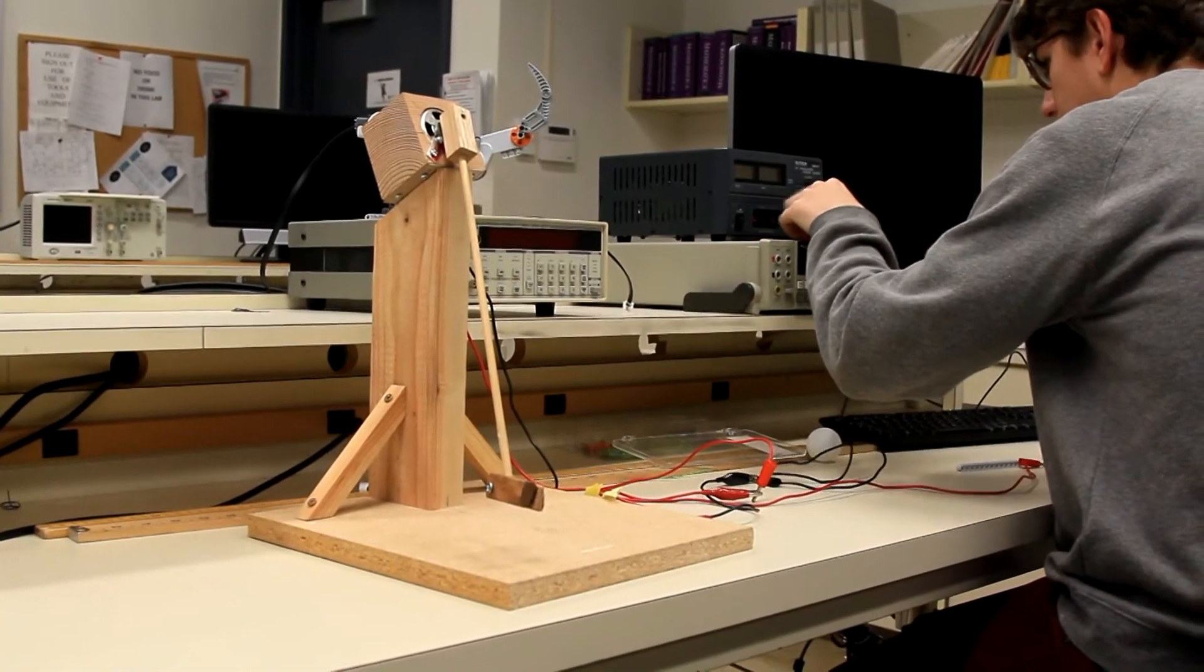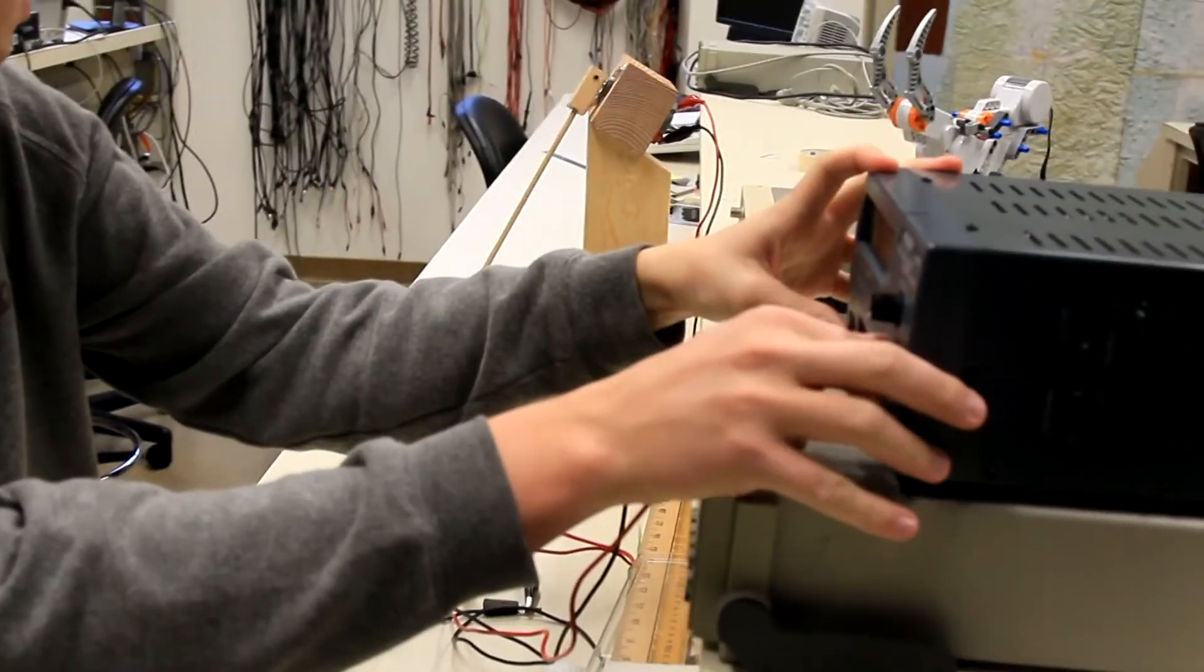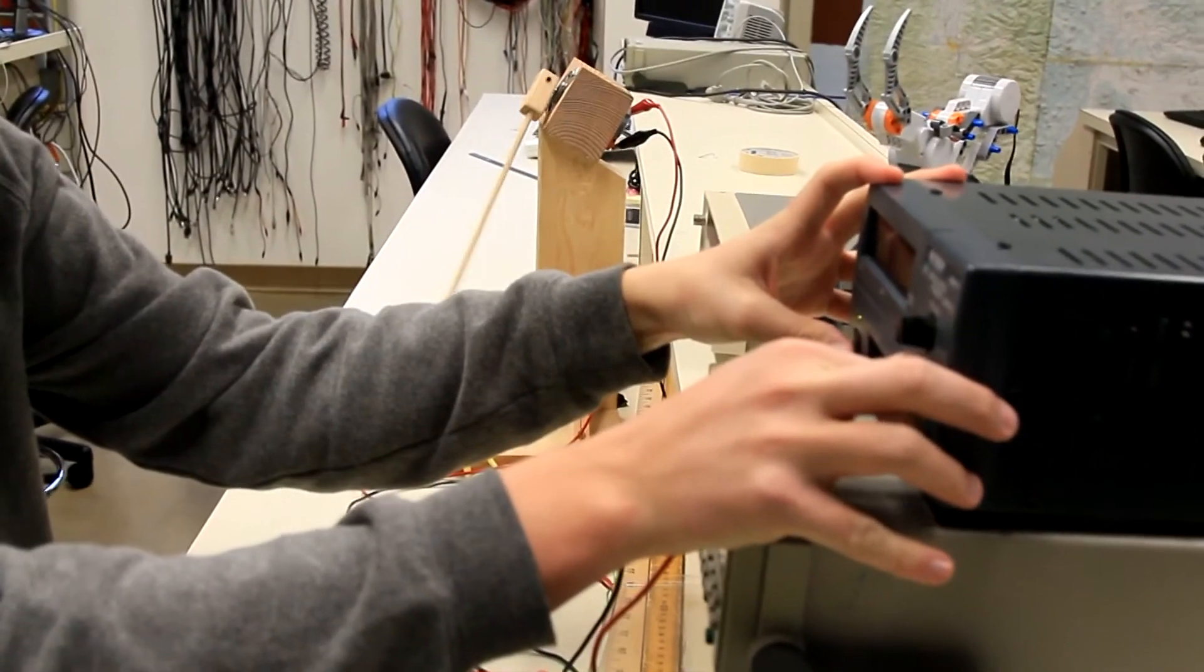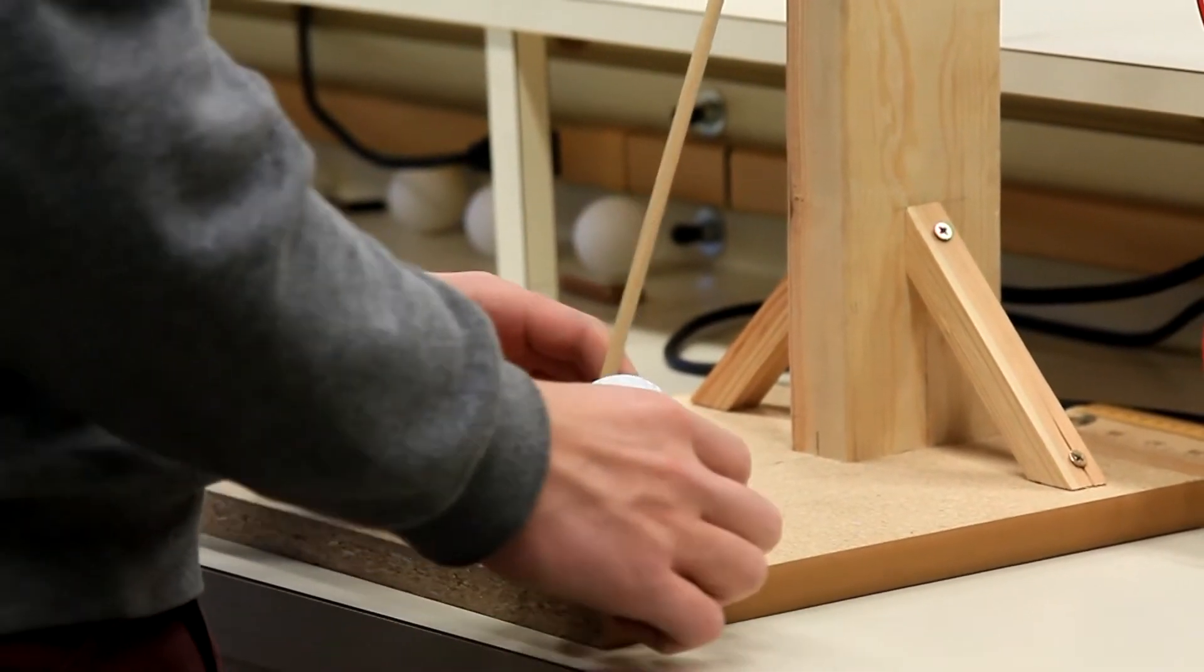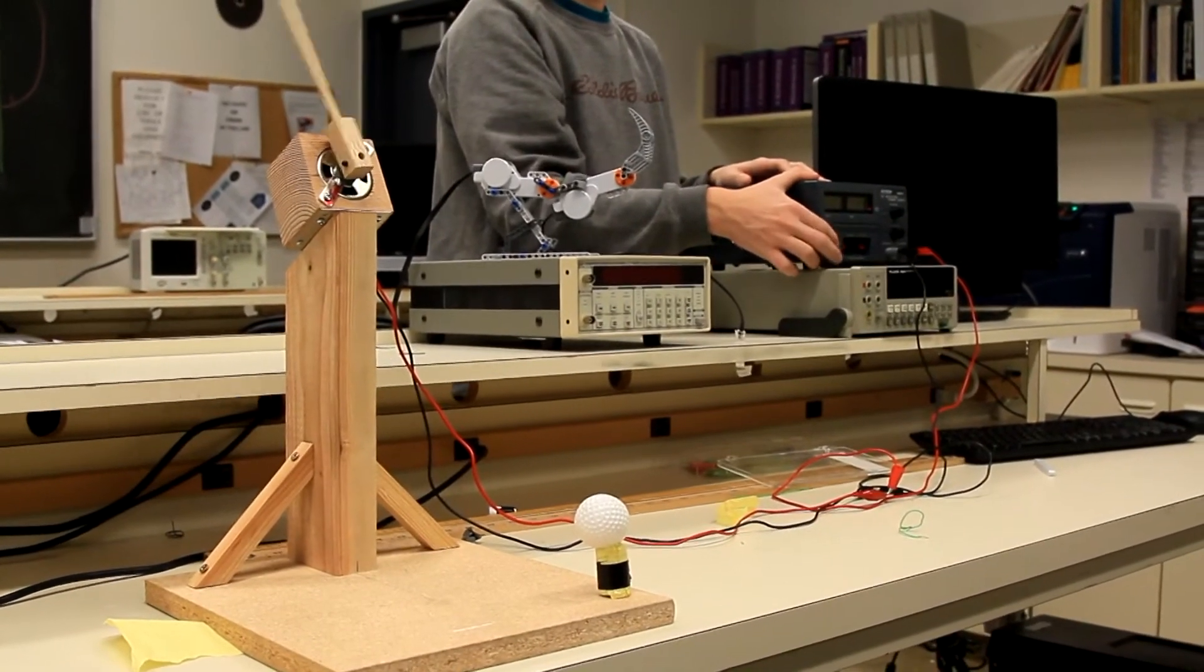We began with a simple scaled prototype consisting of a low voltage electric motor on a non-adjustable mount and a wooden golf club used to strike a plastic golf ball. This proof of concept gave us enough confidence to move forward and build our robot full scale.